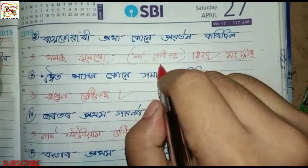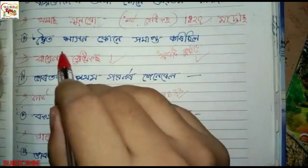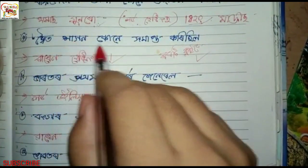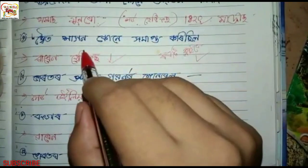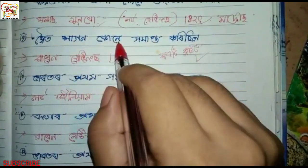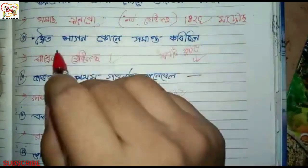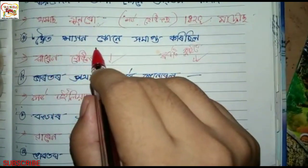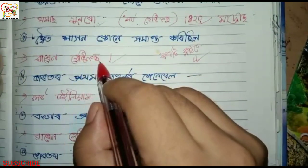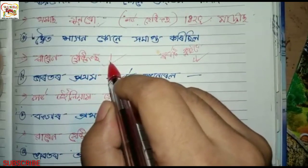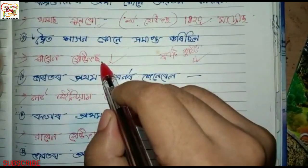Our next question is: how did he do it? Robert Clive. How did he do it? And the answer is Warren Hastings. The question is Lord Hastings and Warren Hastings. I am confused.